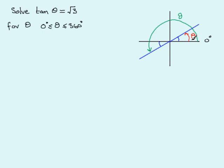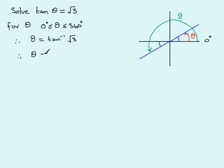Now we need to find the actual angle values. On the calculator, theta equals the inverse tan of √3. You should really know this one, but you can use a calculator if needed. The inverse tan of √3 is 60°, so I mark that in as 60°.